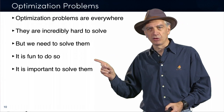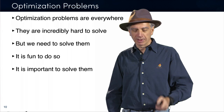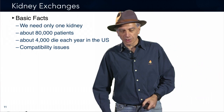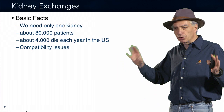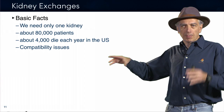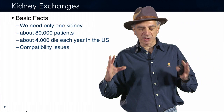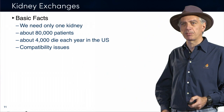For some problems it's really, really important to solve them because they make a big difference in people's lives. The first example is kidney exchanges. Medically, everyone can live with one kidney. But every year about 80,000 patients in the US require a kidney transplant, and about 4,000 of them die every year because the transplant is not ready — due to compatibility issues.